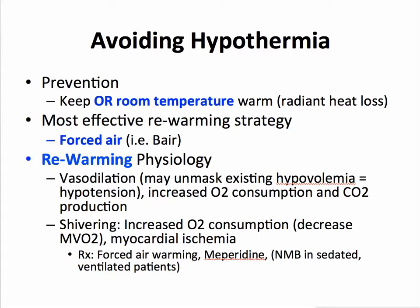To avoid hypothermia, one of the most important things is to keep the operating room temperature warm. Radiant heat loss — radiating the temperature from your body to cold areas in the room such as the walls — is one of the number one ways of losing heat, so just turn up the temperature in the room. The most effective rewarming strategy is forced air rewarming, such as putting a bear hugger on a patient. When you rewarm someone who was cold, they'll go from a vasoconstricted to a more vasodilated state. If you didn't adequately volume resuscitate that patient, as they vasodilate you may unmask existing hypovolemia and witness hypotension. As you rewarm, oxygen consumption goes up; as tissue temperature goes up, they use more oxygen and produce more CO2, so oxygen consumption and CO2 production are altered.